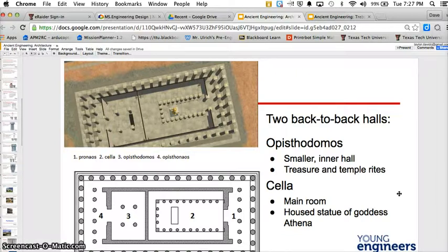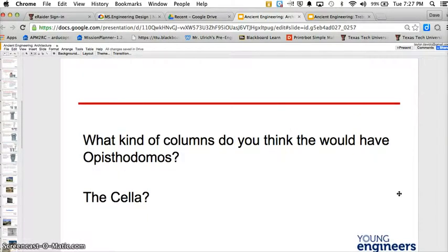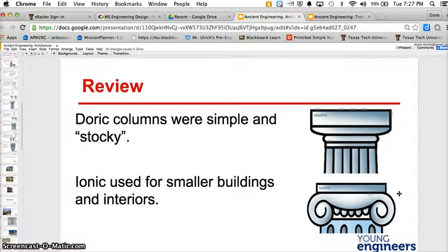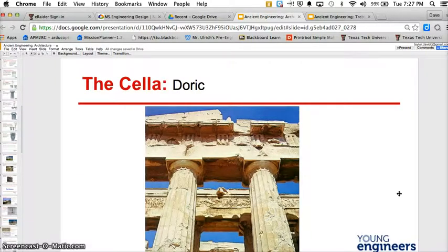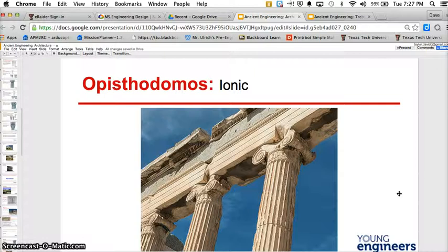All right. It had two back-to-back halls, as you can see here. I'll give you a moment to look over this. And these questions here, let's answer these for you. Doric columns were simple and stocky. Think about this outside structure versus the inside structure. The Ionic used for smaller buildings and interiors. Doric and Ionic.